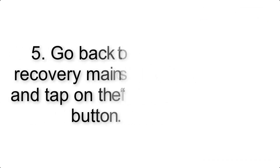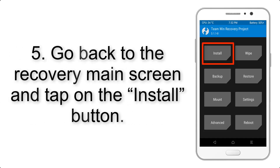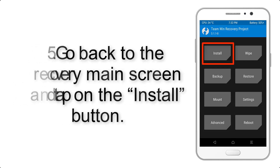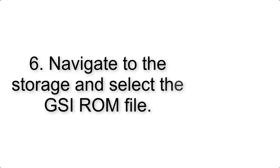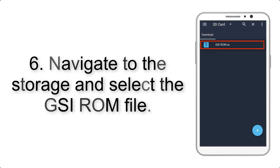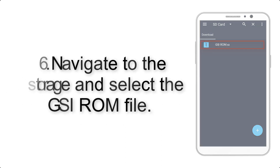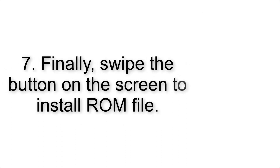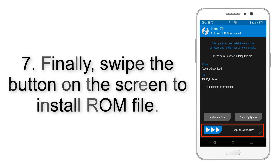Step 4: Swipe the button to wipe the device. Step 5: Go back to the recovery main screen and tap on the Install button. Step 6: Navigate to the storage and select the GSI ROM file.